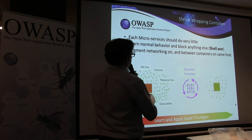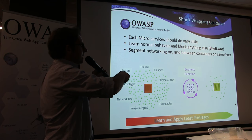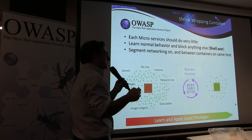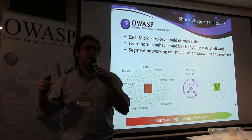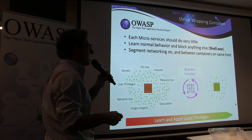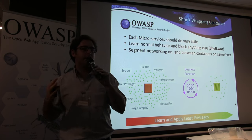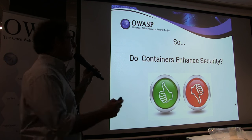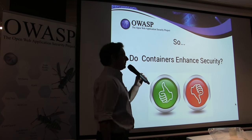To wrap up: if we had done shrink-wrapping on this container and properly locked it down, the Python-based exploit would have failed because I would not have been able to upload the shell.war file, and the base64 encoding would have also failed. So, do containers enhance security? It is not a yes or no answer.